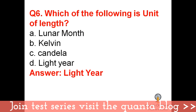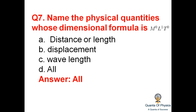Which of the following is a unit of length? Light year is a unit of length used to measure long distances. Question number seven: name the physical quantities whose dimensional formula is M0 L1 T0 — that is distance or length, displacement, and wavelength.